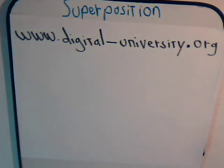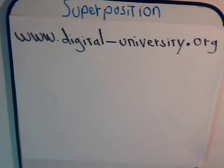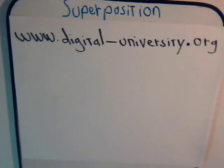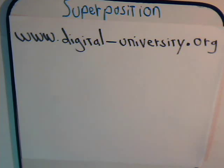This is video number 42 from digital-university.org. In this video we're going to consider some examples of using the superposition technique. This is when you have a circuit that has one or more voltage sources, one or more current sources, or a combination of both. In past videos we used the super node and super mesh techniques to analyze circuits. Sometimes the situation is simple enough that you can use the superposition method instead. We'll show some examples here and in the next two or three videos.